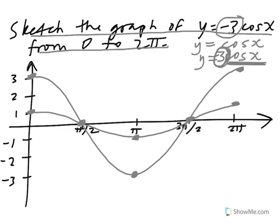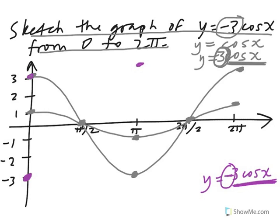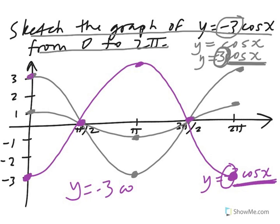There we go. We're almost ready to sketch what we want, and that is y equals negative 3 cosine of x. We've already sketched 3 times cosine of x, so what does this negative do? It takes all the values we have for 3 cosine of x and multiplies them by negative 1. So a y value of 3 becomes negative 3, and a y value of negative 3 goes to positive 3. The positive 3 over here now becomes negative 3. It still crosses the x-axis at the same points, because negative 1 times 0 is still 0. And there you have it — this is the graph of y equals negative 3 cosine of x.